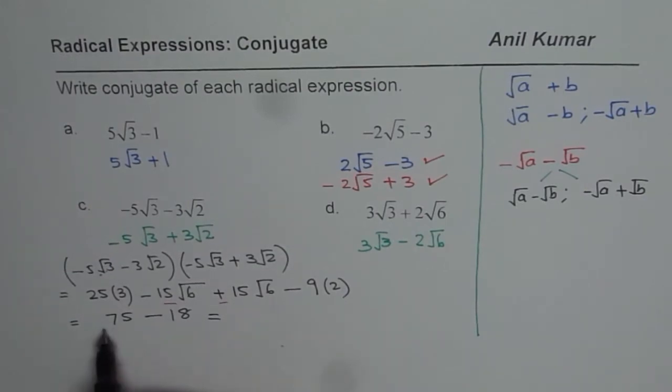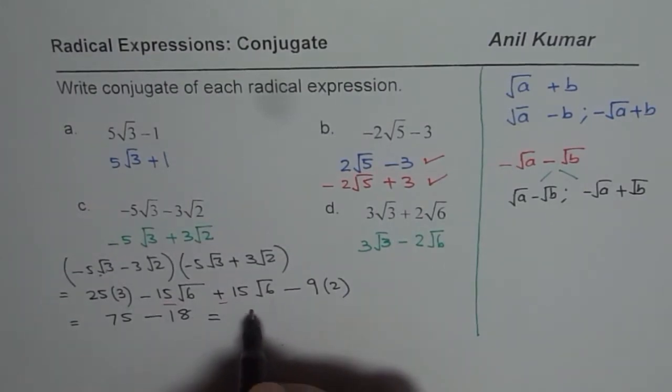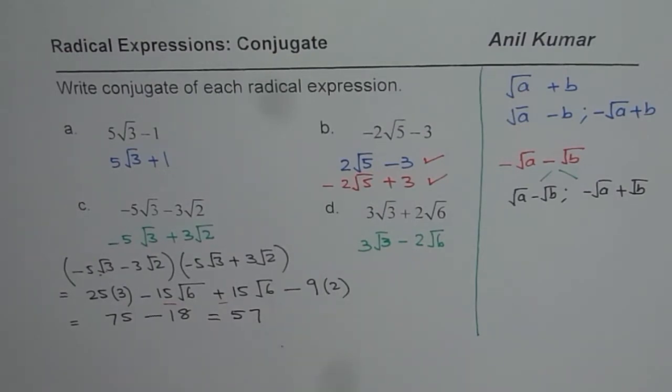Do you understand? So when you take away from 15 you get 7 and from 6 you get 5. So 57 is your answer.